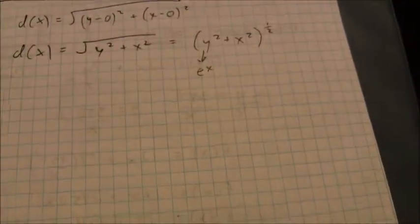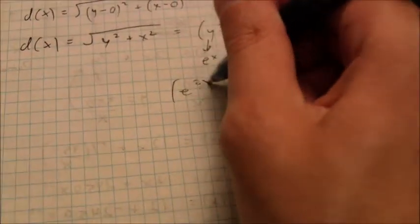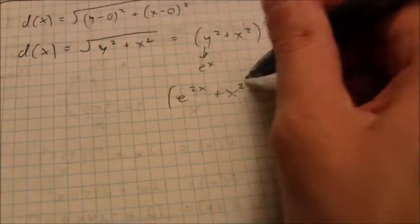And be careful when you substitute that in. That e to the x is being squared. So that is e to the 2x plus x squared all raised to the one-half power.